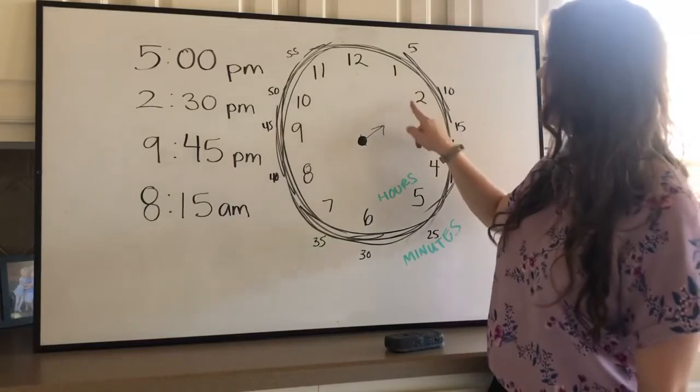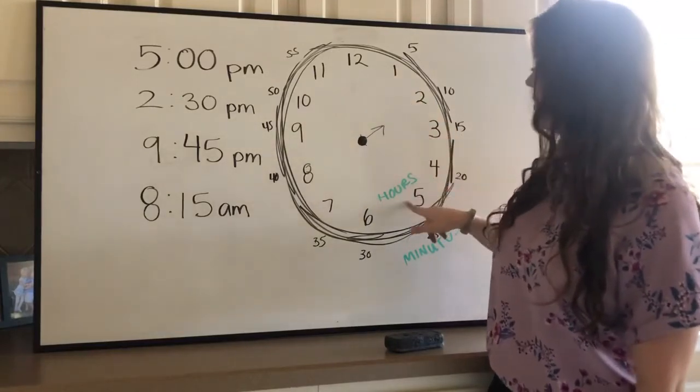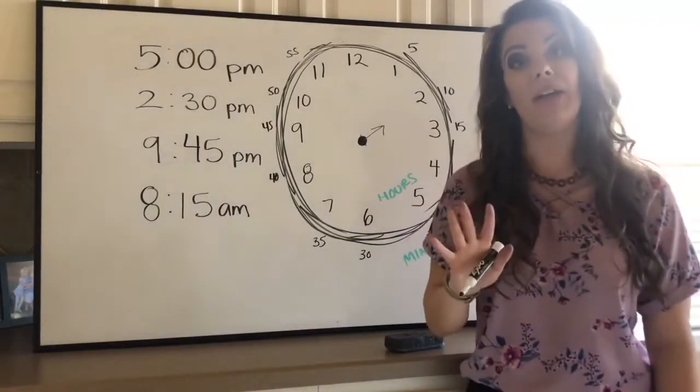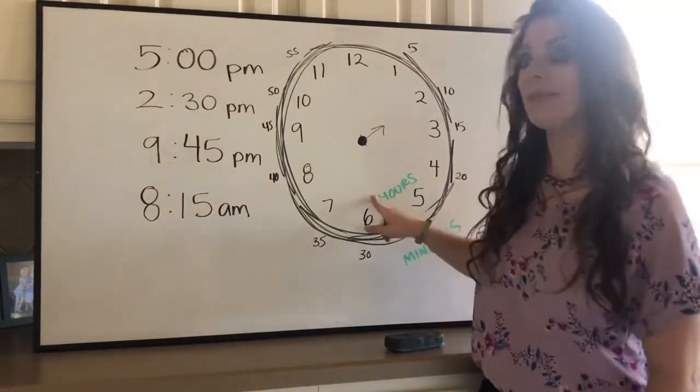Five, 10, 15, 20, 25, 30. And that makes sense because if we're skip counting by five, five groups of six equals 30.